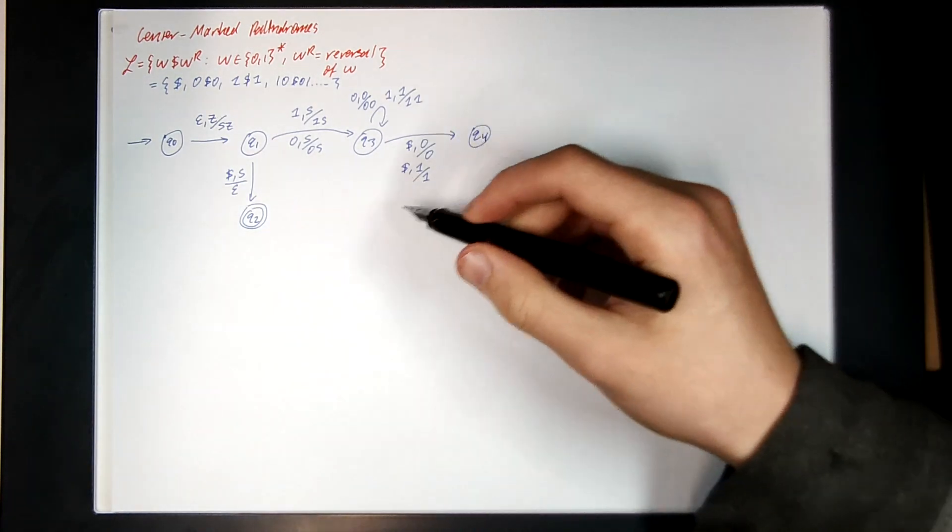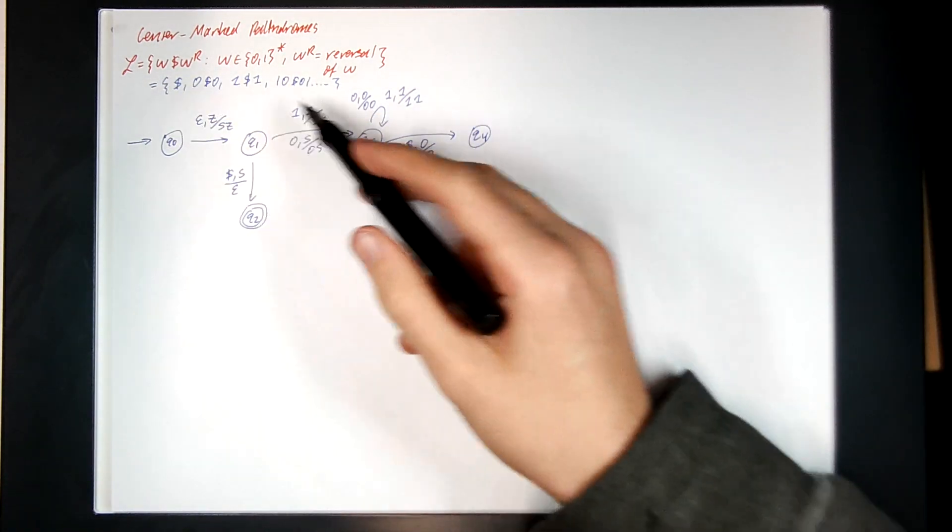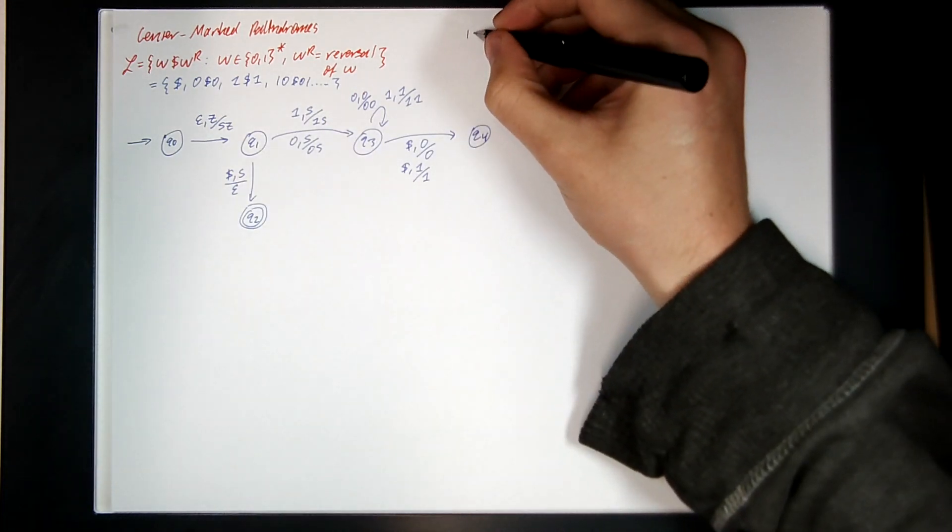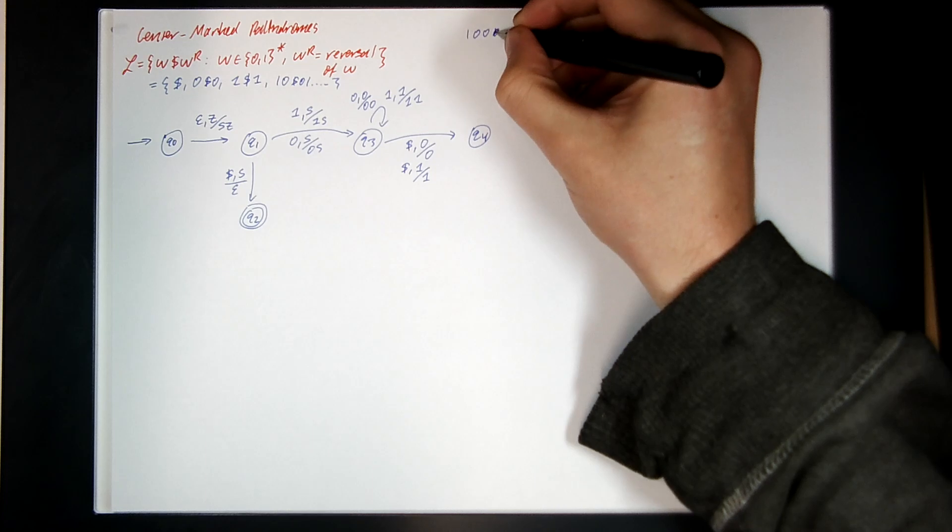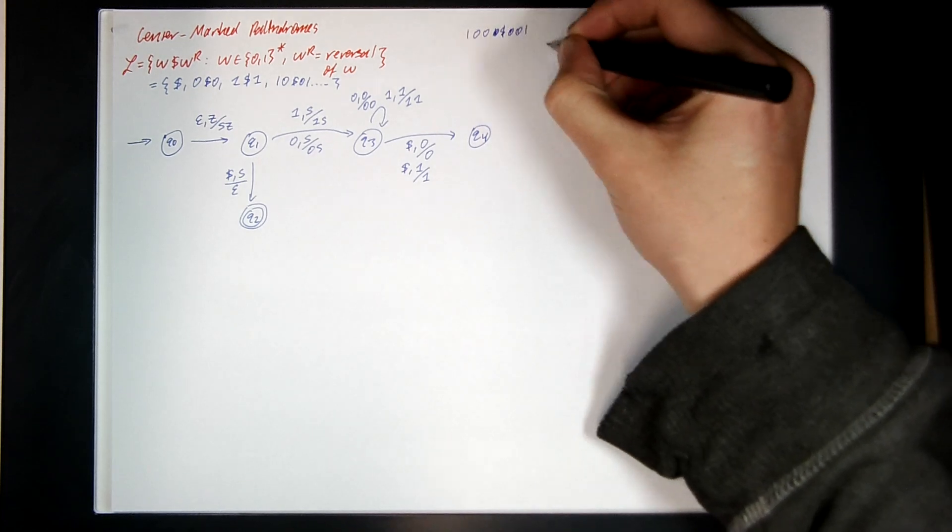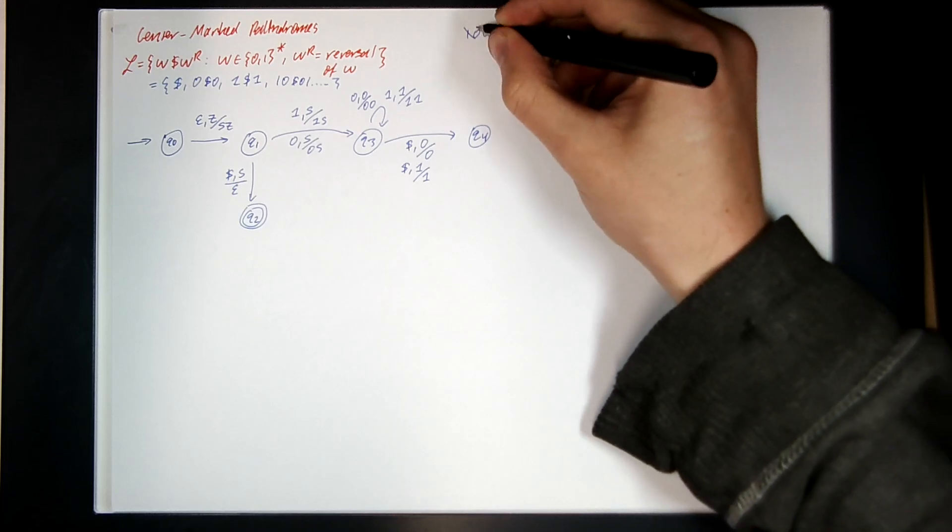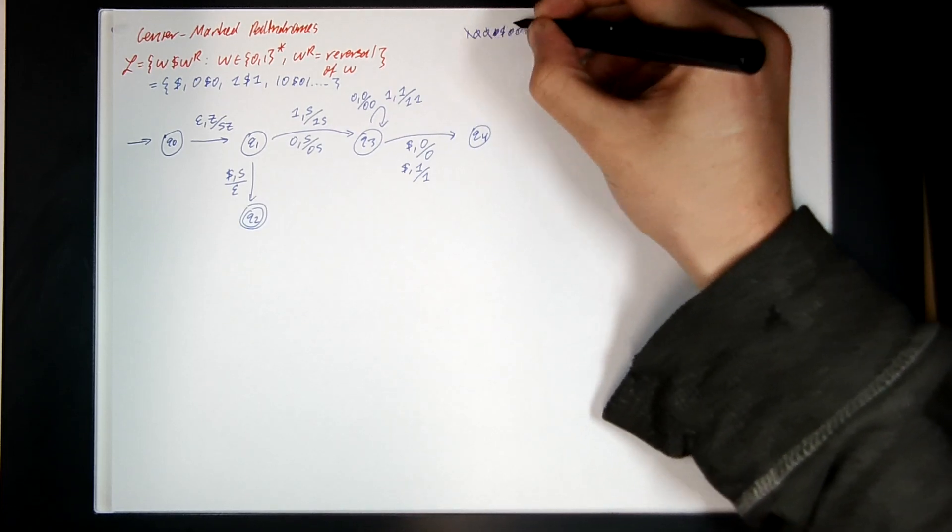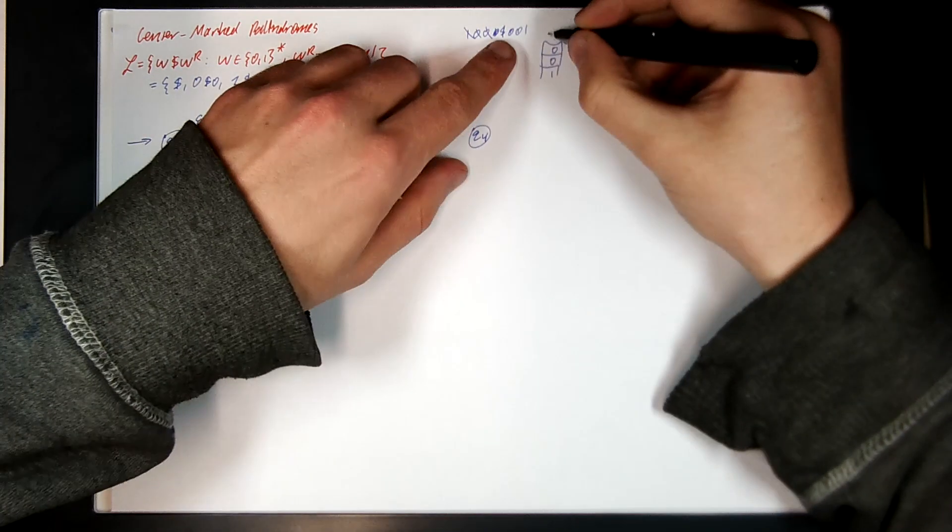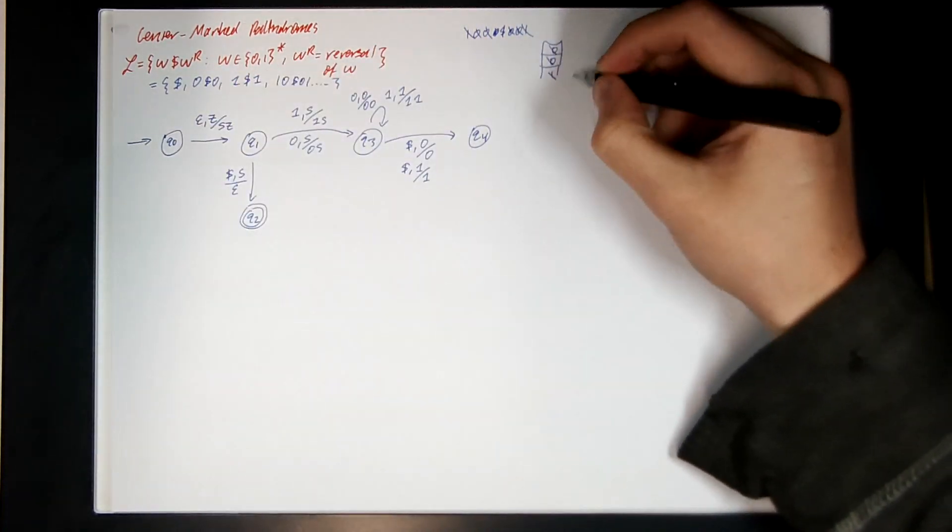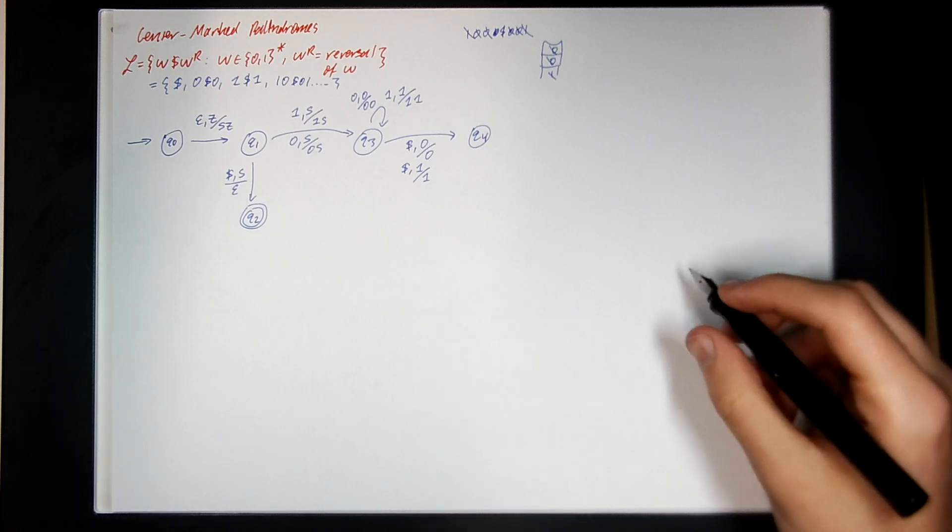And what Q4 will do is it will read the input and then pop things off the stack such that they match. The idea is if I have a palindrome, one, zero, zero, dollar sign, zero, zero, one. Push the one, push the zero, push the zero, dollar sign, time to go backwards. Match the zero, match the zero, match the one. So that's how this thing is going to recognize center marked palindromes.